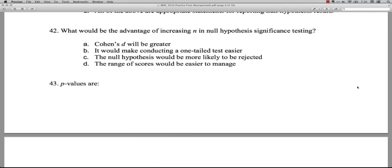Question 42: What would be the advantage of increasing N, that's the sample size, in null hypothesis significance testing? Our choices are Cohen's D would be greater. Cohen's D is the standardized effect size, and it's used to indicate the difference between means, either one mean, sample mean from a population mean, or two sample means from each other. The sample size has nothing to do with that. In fact, Cohen's D specifically ignores the sample size, so that is not A. It would make conducting a one-tailed test easier? Well that has nothing to do with anything. The sample size is irrelevant for that. C, the null hypothesis would be more likely to be rejected. That is true, because when you have a large sample you have a much smaller standard error, which means that a smaller difference between the means can become statistically significant. So again, bigger samples, more likely to get statistical significance. So C is true. D, the range of scores would be easier to manage? That's just nonsense, ignore that. So the answer for 42 is C, the null hypothesis would be more likely to be rejected.